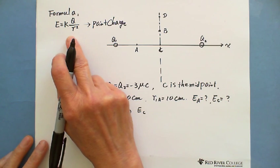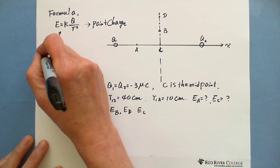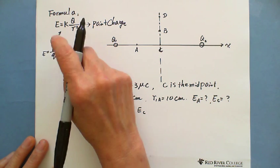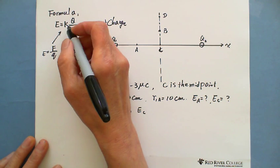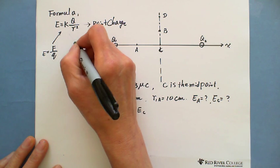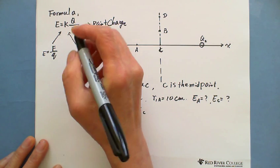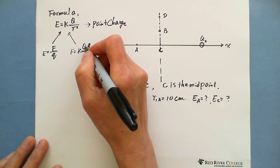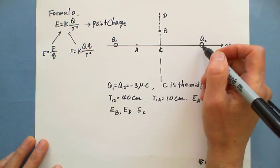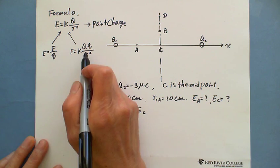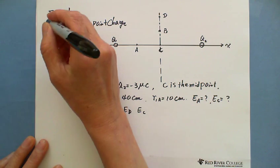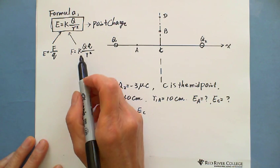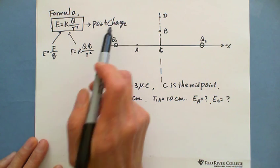This formula actually comes from combining two equations. One is the definition E = F/Q, where Q is the test charge. The other is Coulomb's law: F = KQq/R², where the capital Q is the source charge and small q is the test charge. When you combine these two formulas, the test charge q cancels out. Because Coulomb's law is only for point charges, the derived formula E = KQ/R² is also only for point charges.